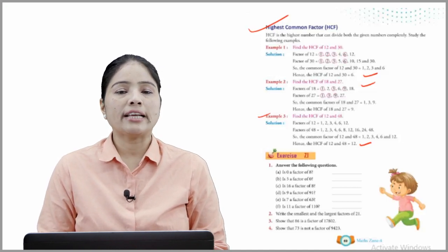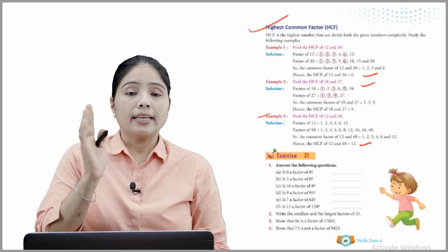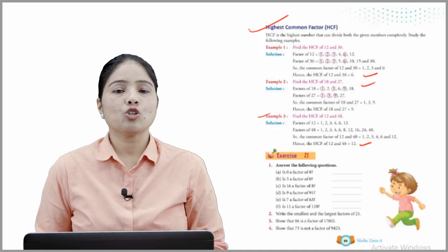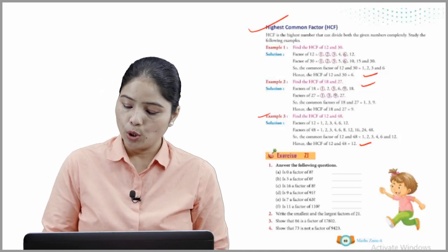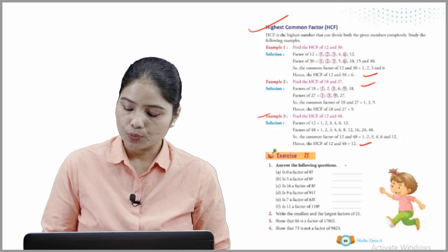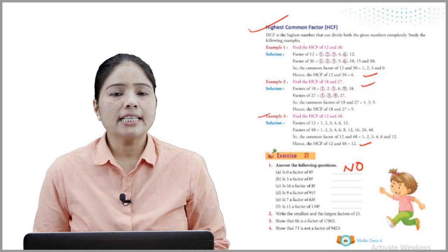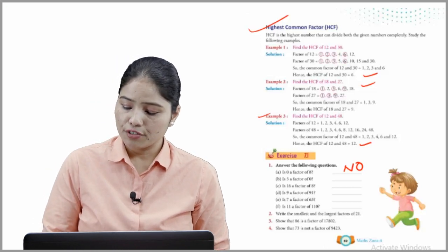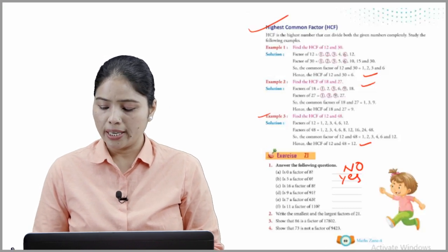Now move on to Exercise 7.1. Answer the following questions. Is 0 a factor of 8? No — the answer is no. Is 5 a factor of 0? Yes, 5 is a factor of 0. The other questions you have to complete on your own.